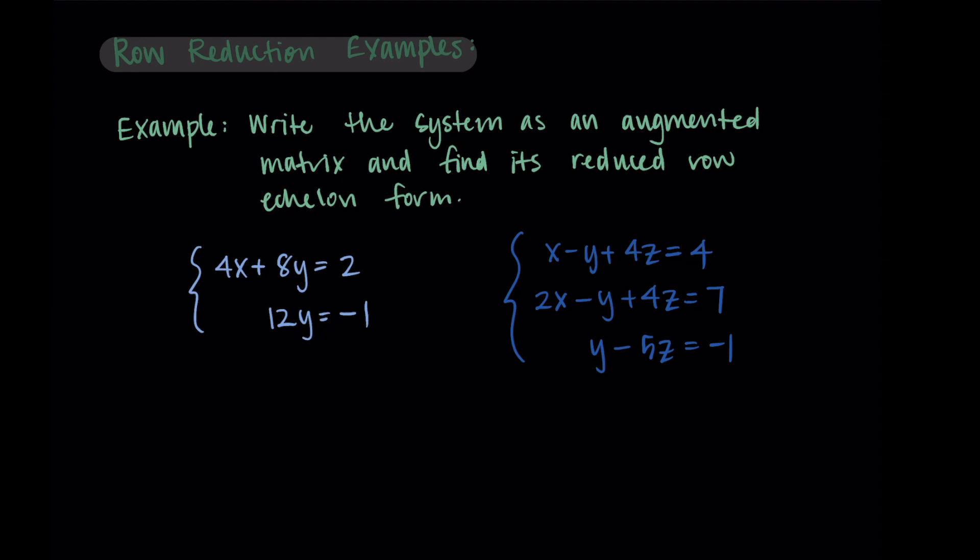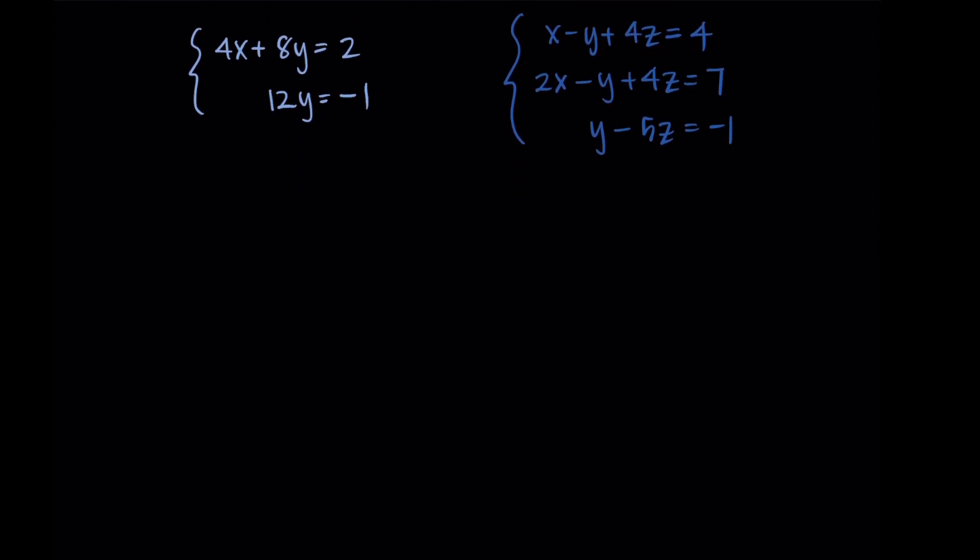We need to write these systems as augmented matrices. I'm going to do that first for both of them, just to get it out of the way and make sure we remember what our ultimate goal is with row echelon form. For the first system, I can see that all of the variables are already on the left-hand side with the constants on the right, so I can immediately put this into the augmented matrix.